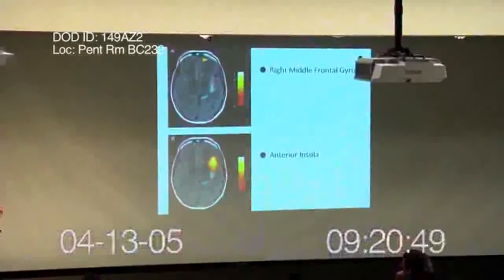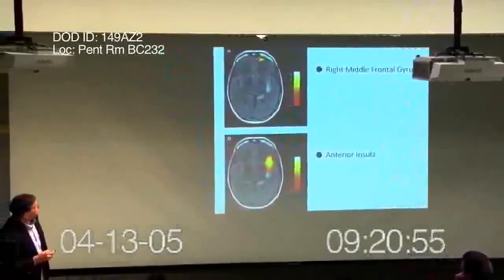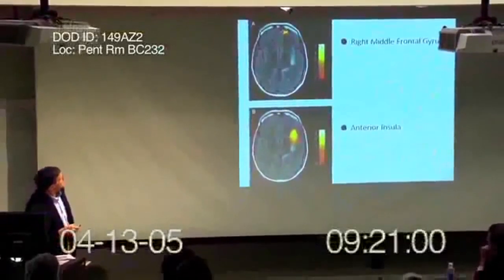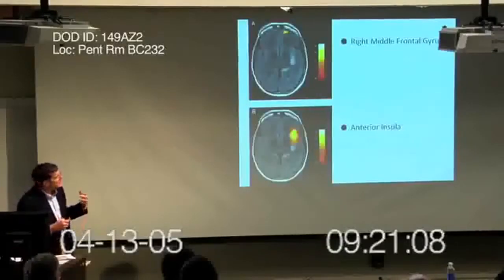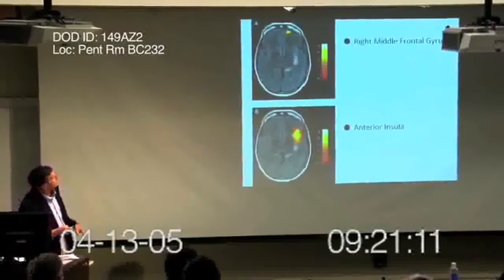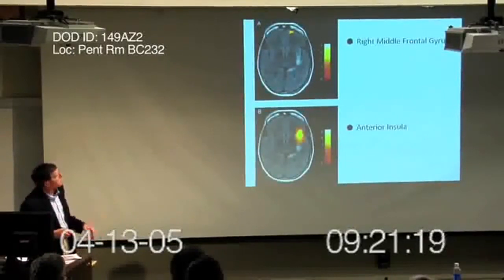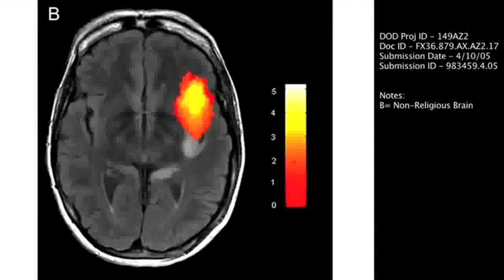In each case, these individuals were read a religious text. The religious fanatic lit up the right middle frontal gyrus, shown here — that's a part of the brain associated with theory of mind, having to do with intents, beliefs, and desires. In marked contrast, here's an individual who would not particularly self-describe as religious, and when they're read a religious text, this part of the brain called the anterior insula lights up.